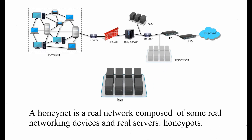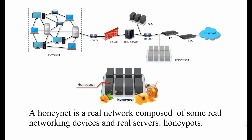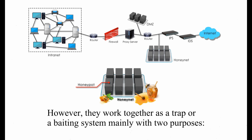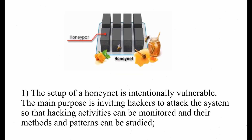First of all, a HoneyNet is a real network composed of some real networking devices and real servers, which we call HoneyPots. A HoneyNet looks real and HoneyPots appear legitimate. However, they work together as a trap or a baiting system mainly with two purposes. One, the setup of the HoneyNet is intentionally vulnerable. The main purpose is inviting hackers to attack the system so that their hacking activities can be monitored and their methods and patterns can be studied.